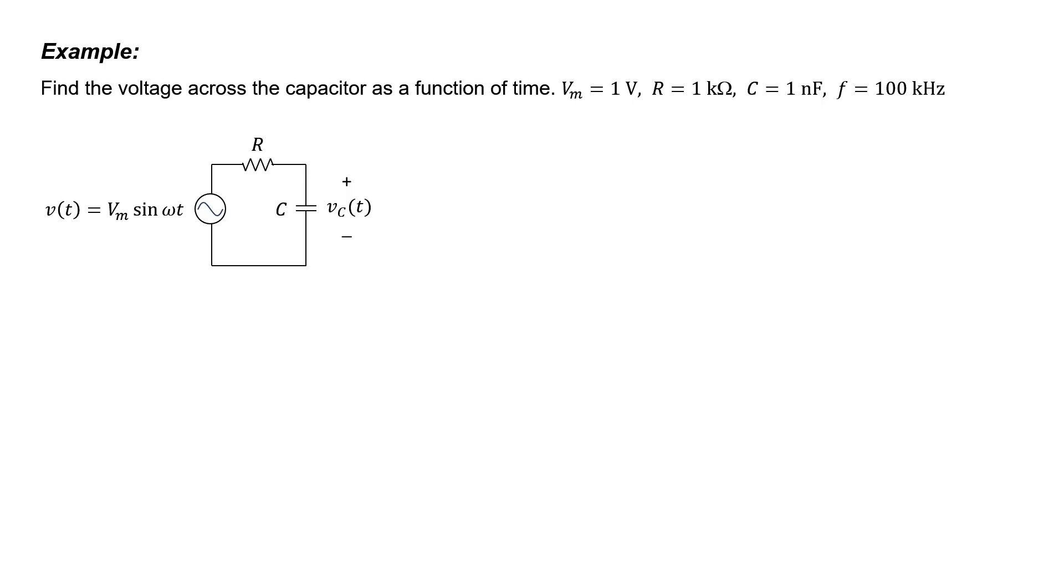The goal here is to find the voltage Vc across the capacitor as a function of time. Let's label the current as I. This equation describes the voltage drop across that resistor. Furthermore, we know the relationship between current and voltage in a capacitor. Combining, we can eliminate the current I.